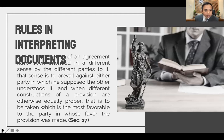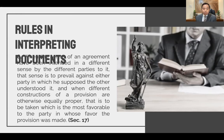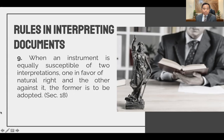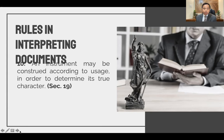When the terms of an agreement have been intended in a different sense by the different parties to it, that sense is to prevail against either party in which he supposed the other understood it. When different constructions of a provision are otherwise equally proper, that is to be taken which is most favorable to the party in whose favor the provision was made. When an instrument is equally susceptible of two interpretations, one in favor of natural right and the other against it, the former is to be adopted. An instrument may be construed according to usage in order to determine its character.